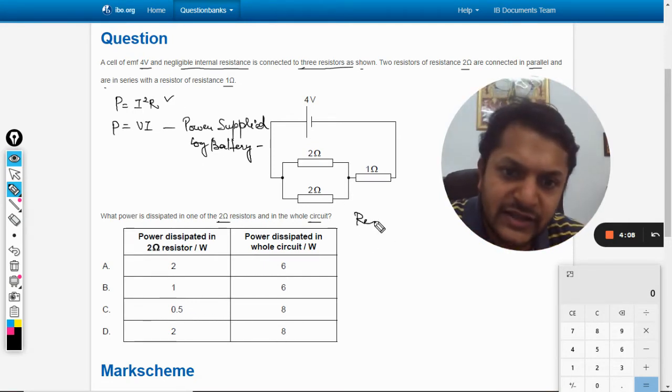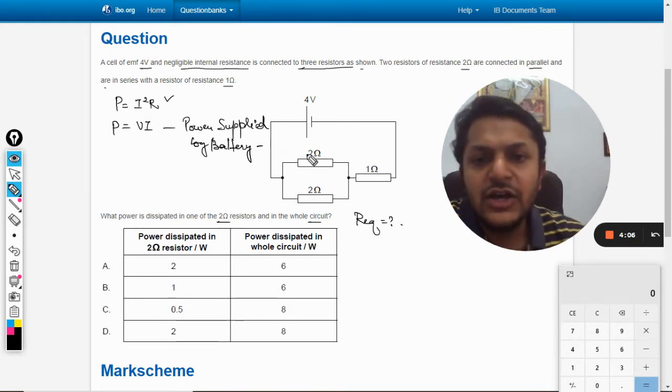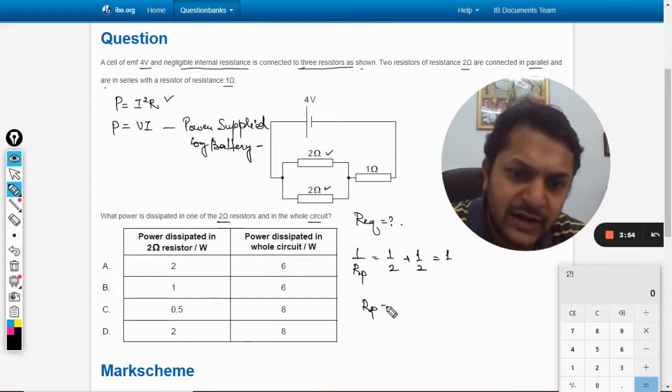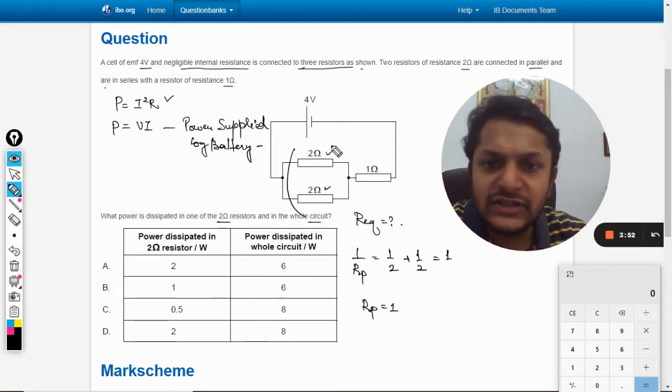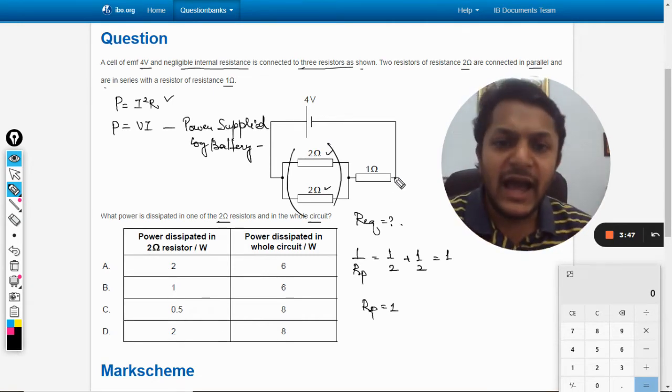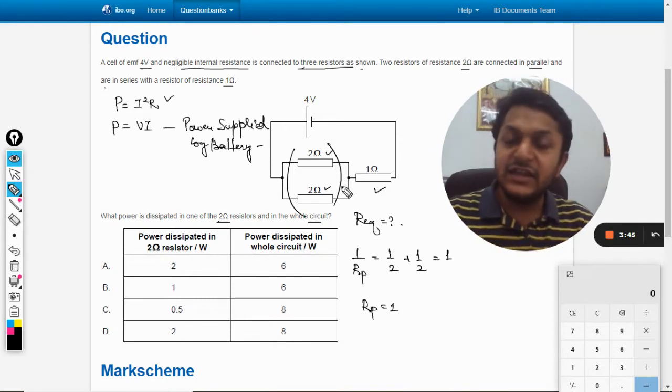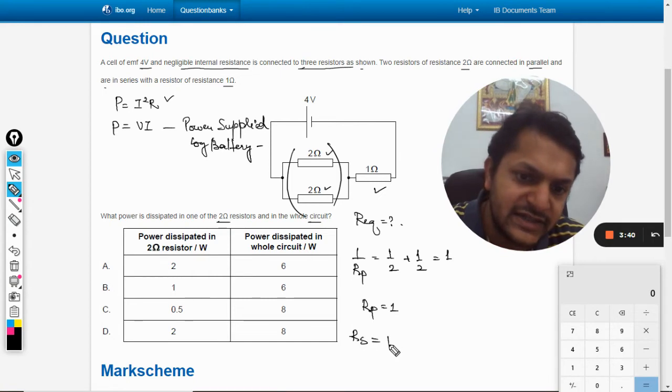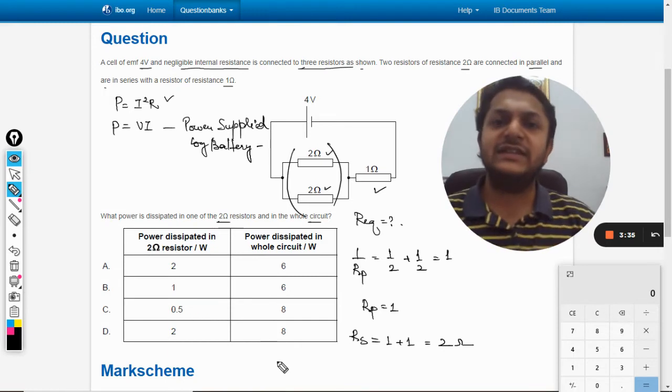So in this case, first of all let us find the R equivalent. This R1 and R2, let's say both of them are in parallel, so 1/Rp = 1/2 + 1/2, which is 1. So the resistance Rp is 1. Those who are in parallel, the R equivalent becomes 1, and later it is in series with 1 ohm again. So what is the R series? 1 + 1, that is 2 ohm.